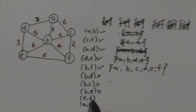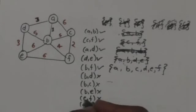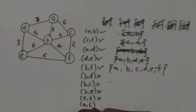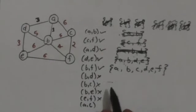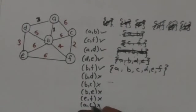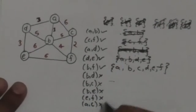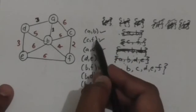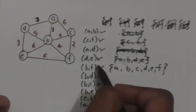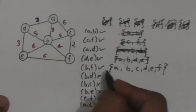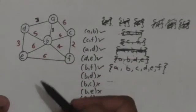Next edge is AC. Both vertices A and C are in the same set, so we will not select this edge. So here we have selected these edges: AB, CF, AD, DE, and BF to include in the minimum spanning tree of this graph.